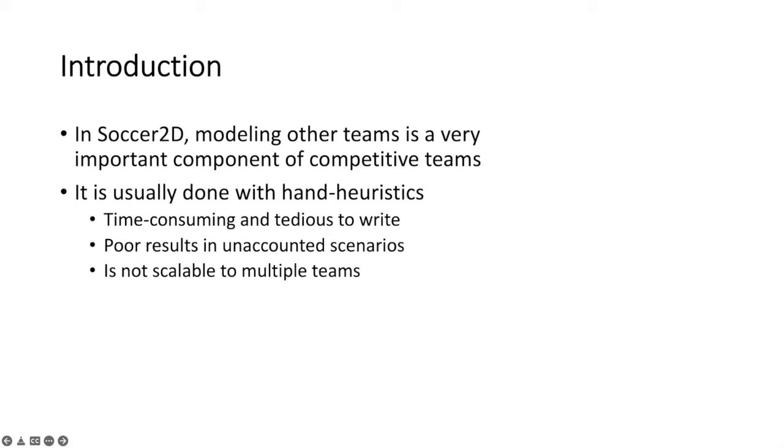However, one of the most common approaches to building team models consists of hand crafting heuristics into the agent's code. These are very time-consuming and error-prone. Because of that, they tend to be an over-simplification that don't work well with adaptive teams and do not scale to multiple teams.